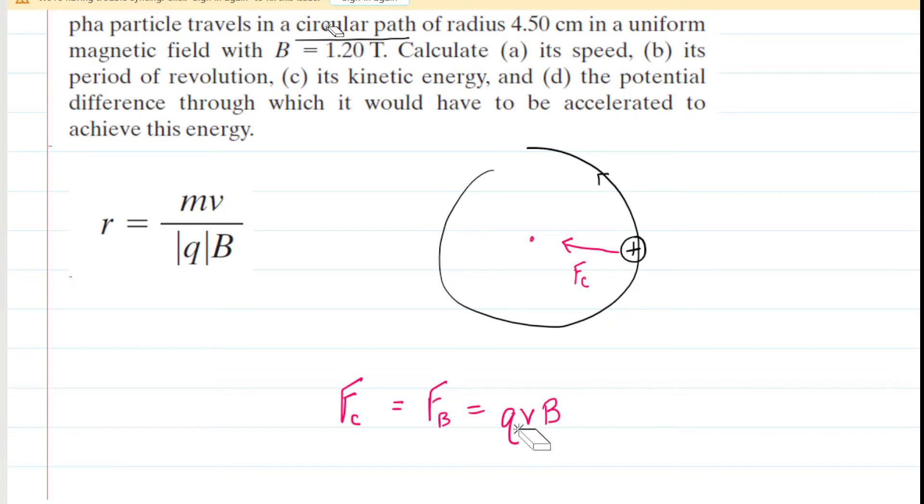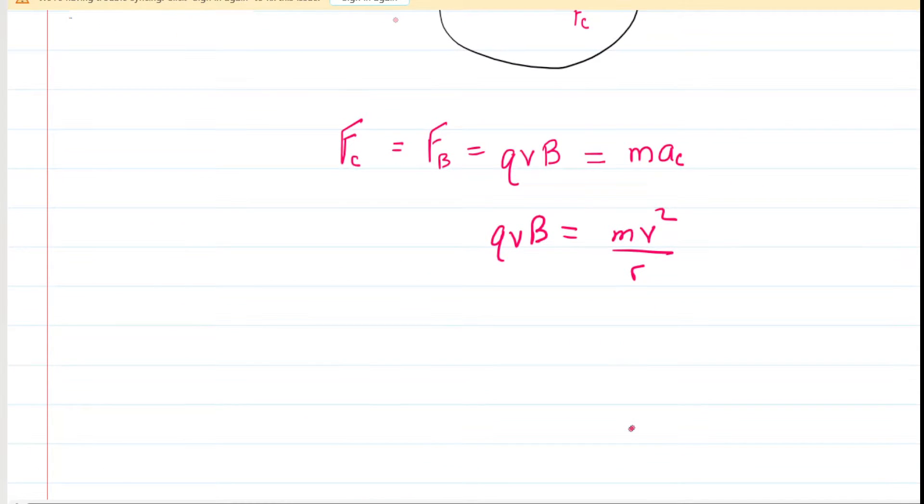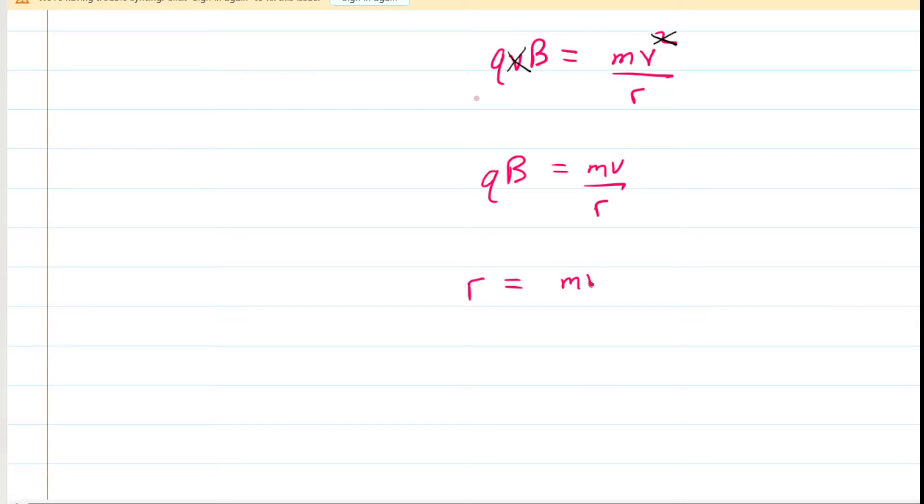So we can write the magnitude of the magnetic force as QVB. That is the centripetal force, and according to Newton's second law, the centripetal force must equal the mass times the centripetal acceleration. But perhaps in your previous physics studies, you've learned that the centripetal acceleration is equivalent to the speed squared divided by the radius. And so now we can start to see where that equation from earlier is going to come from. We can divide both sides by V, or multiply by 1 over V. That's going to cancel the V on this side and one of the factors of V on the right-hand side. So now we have QB is equal to MV over R. Through a little bit of algebraic manipulation, we could solve for R, and we would get MV divided by QB. That's where that equation comes from.